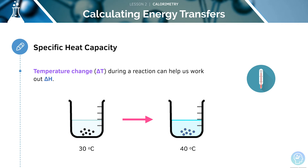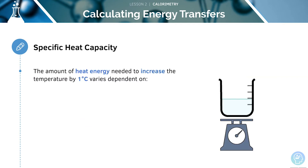Delta T, shown here, is the temperature change of the water or solution. The units of this are measured in Kelvin. Here, there is an increase in temperature from 30 degrees C to 40 degrees C. This means that the reaction must be exothermic and the heat is given out to the water. However, temperature change doesn't tell us the whole story.